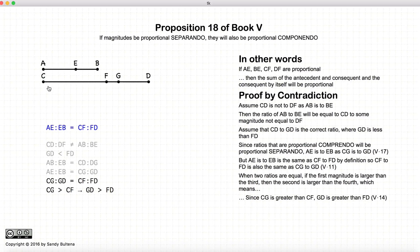Well, CG is larger than CF. So CG is larger than CF, that means that GD is greater than FD.